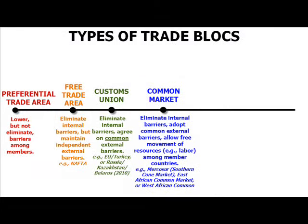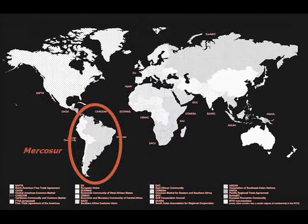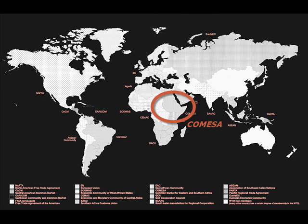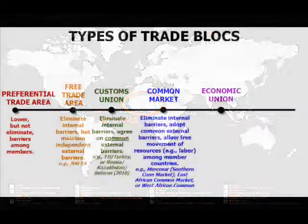Examples of common markets include Mercosur, also known as the Southern Cone Market, whose members include Argentina, Brazil, Paraguay, Uruguay, and Venezuela's membership pending at the moment. Other examples would be the East African Common Market or the West African Common Market.